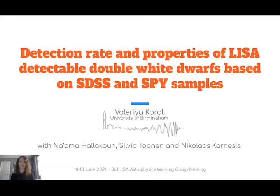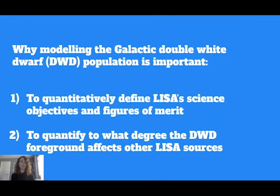In this short presentation I would like to share some recent results on the estimate of detection rates and population properties of the LISA-detectable double white dwarfs derived from the SDSS and SPY spectroscopic samples. The two reasons we return to modeling the galactic double white dwarf population are to quantitatively define LISA science objectives and figures of merit, and to estimate to what degree the double white dwarf foreground will affect the detectability of other LISA sources.